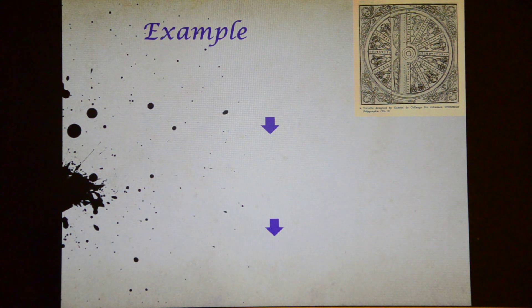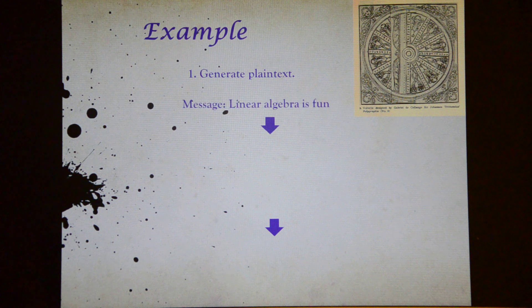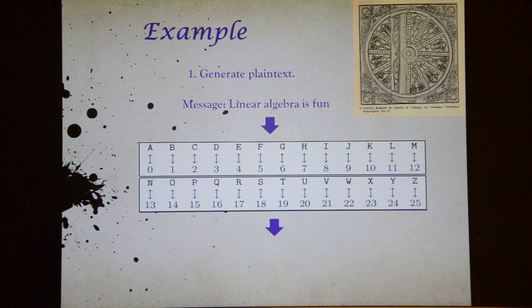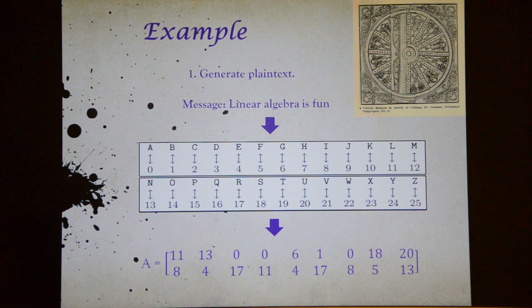Let's look at an example of how Hill cipher actually works. Suppose I have a secret to tell you, which is 'linear algebra is fun.' The first thing to do is to generate the plaintext. Hill cipher assigns each letter a number from 0 to 25, and 26 for the blank. Through this process, we create an N by N matrix A. If there is an unfilled spot after converting, simply fill them with 26, which stands for the space.